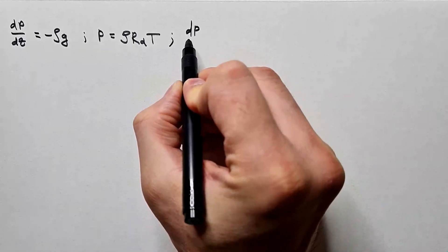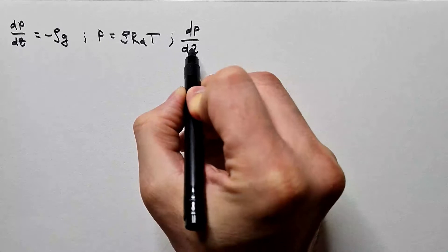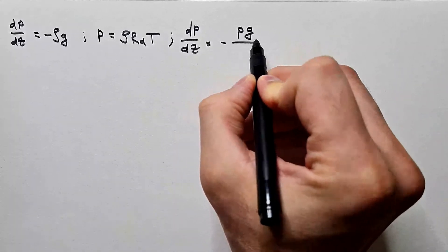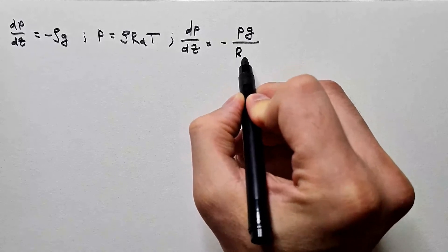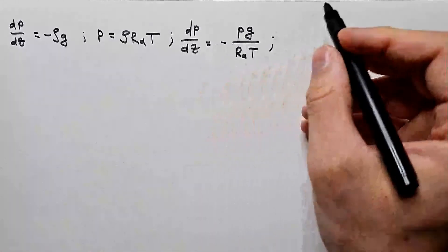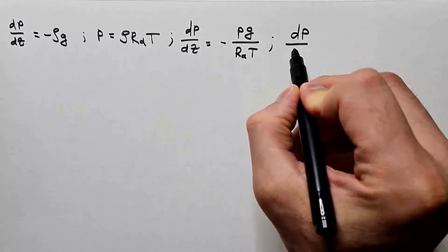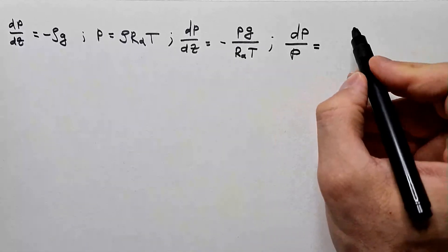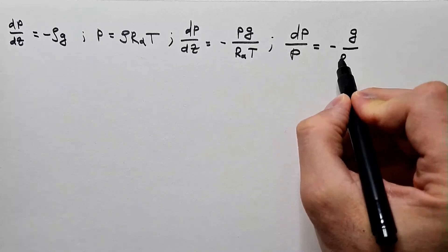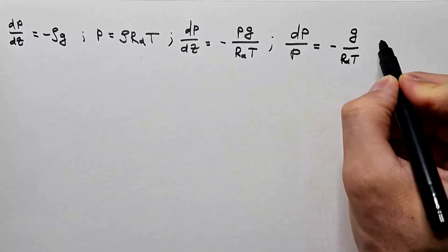Combining these two expressions, we get that dp over dz equals minus pg over Rd T. Or, after rearranging this, we get that dp over p equals minus g over Rd T dz.